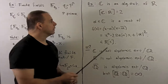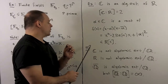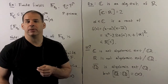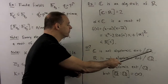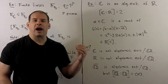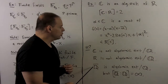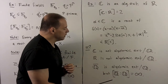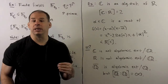Now let's note: we have C is algebraic over the reals. But because we have pi, which is transcendental, in the complex numbers, the complex numbers are not algebraic over the rationals. Likewise, the reals are not algebraic over the rationals. But we do have the algebraic numbers q-bar, which are an algebraic extension of the rationals. And again, in this case, the degree of q-bar over q is infinite.